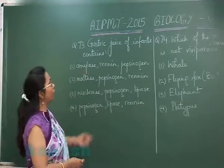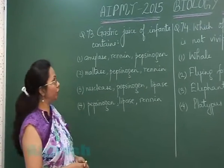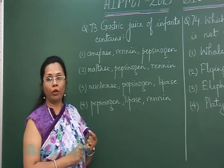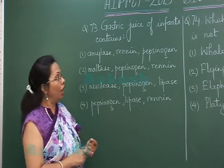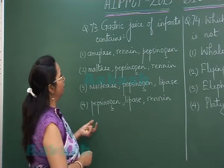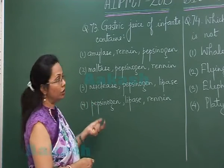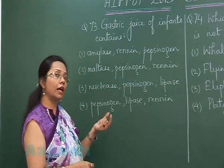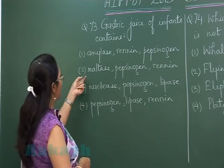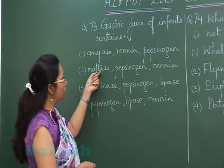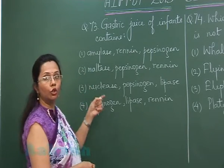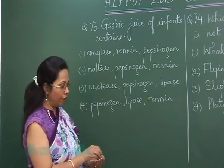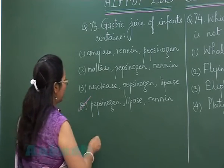Question 73: Gastric juice of infants contains — the enzymes present are pepsinogen, pro-renin, and gastric lipase. In the first choice, amylase is not a gastric enzyme; it is present in salivary juice and pancreatic juice. The second option, maltase, is a small intestinal enzyme. The third, nuclease, is present in pancreatic juice. The fourth choice — pepsinogen, lipase, and renin — is the correct choice. The answer is option four.